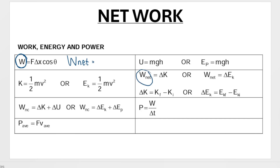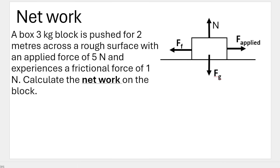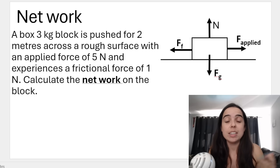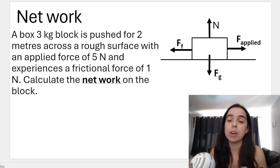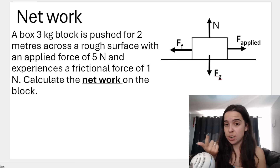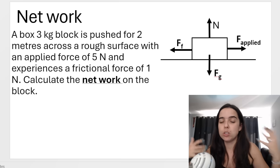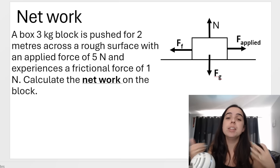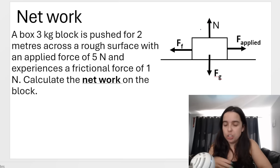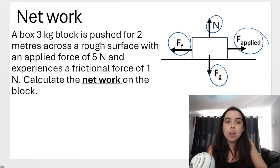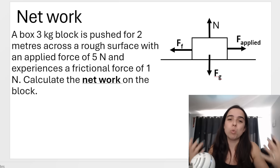And we need it for the work-energy theorem, so knowing how to calculate net work is very, very important. By the end of this video, we're going to do a basic example on how to calculate net work — the net work done on a block by the net force. As you can see, there are four forces acting on this three kilogram block: the normal force, the force of gravity, an applied force, and a frictional force. Each of these forces does work on the box.